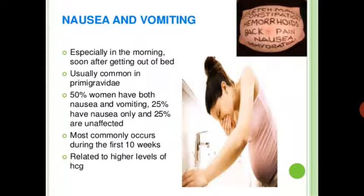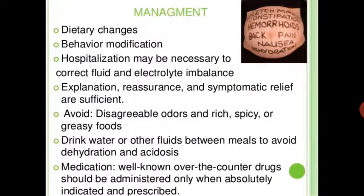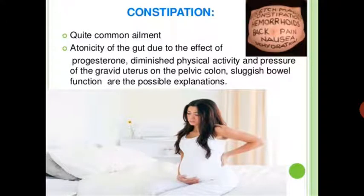Nausea and vomiting most commonly occur during the first 10 weeks and are related to higher levels of hCG. Management includes dietary changes, behavioral modification, and hospitalization may be necessary to correct fluid and electrolyte imbalance. Explanation and reassurance along with symptomatic relief are sufficient. Avoid disagreeable odors and rich, spicy, and greasy food. Drink water or other fluids between meals to avoid dehydration and acidity.